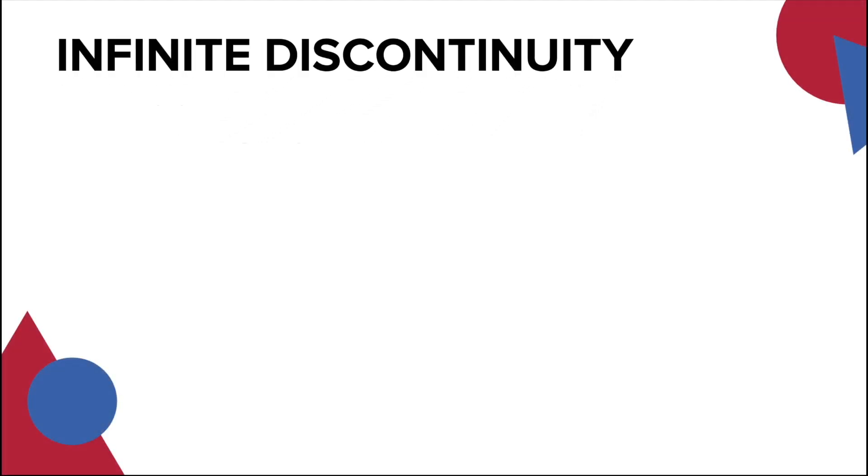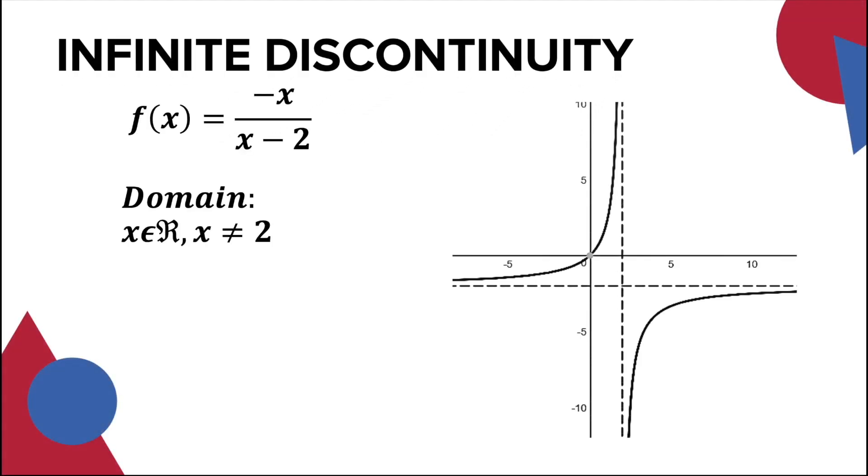For this example, the limit of this function as x approaches 2 from the right is negative infinity while the limit as x approaches 2 from the left is positive infinity. This makes the graph discontinuous at x = 2, which is the asymptote of the graph or the x value that will make the denominator equal to 0.